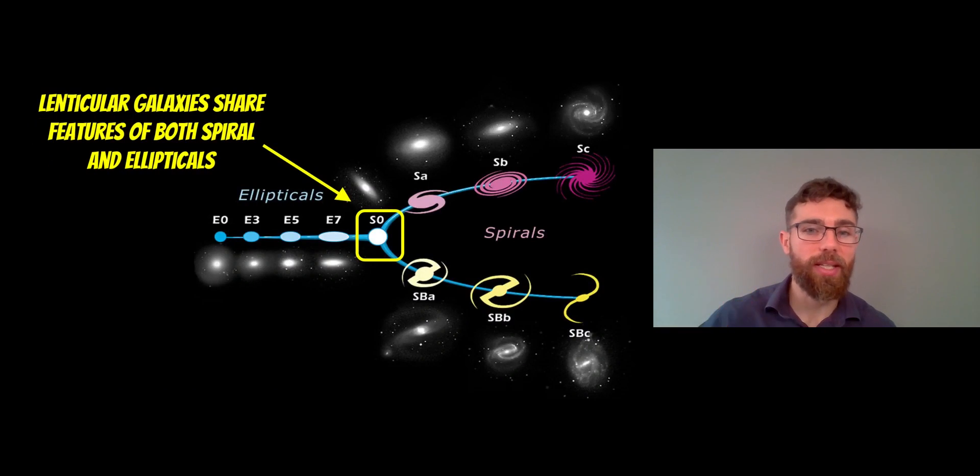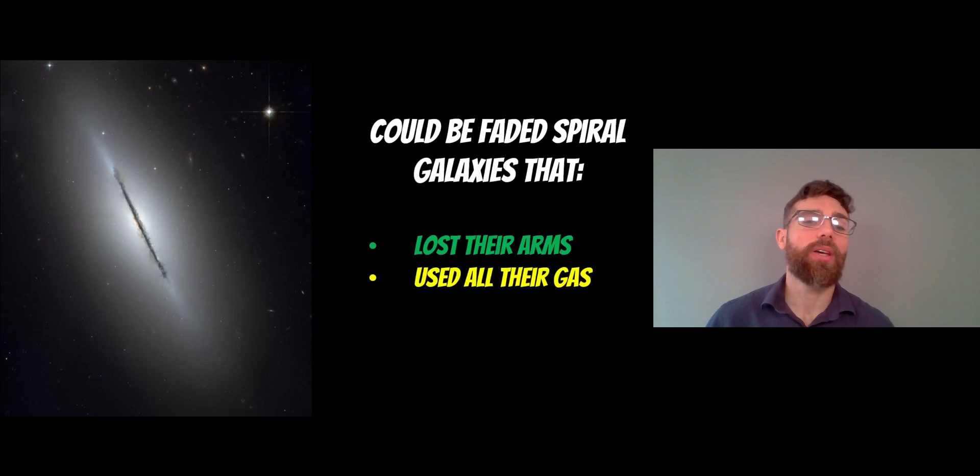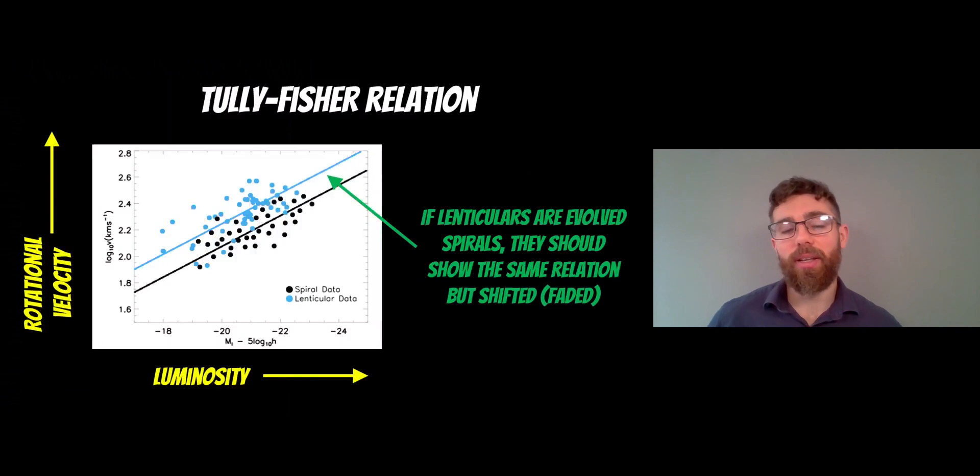And as a result of that, they kind of sit in between. Between the spirals on the right and the ellipticals on the left, they sit here in this S0 section. This is where your lenticulars are going to sit because they do share features of both. Now, how do they actually get there or what forms them? Well, there's a few ideas, actually. Three of the main ideas: first, one of the three is that they could be a faded spiral galaxy. These could be a spiral galaxy that have lost their arms. They no longer have a spiral arm and they've used up all of their gas. So all of the gas has been formed into stars and it's basically a late-stage spiral galaxy.